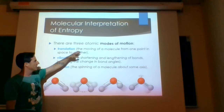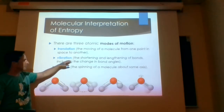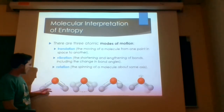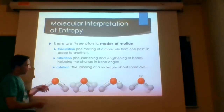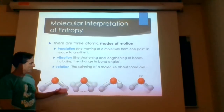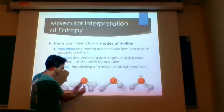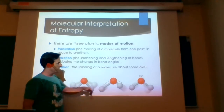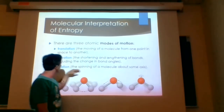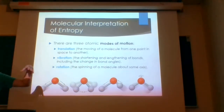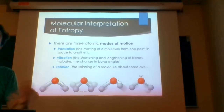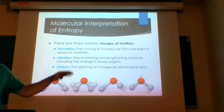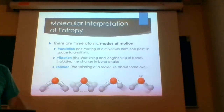There are different ways that molecules can randomly move around. They can move from one place to another — called translation. They can vibrate, where bonds come in and out and atoms move closer and farther apart. Bonds can bend toward each other, and molecules can spin — that's rotation. These are the modes of motion you should be familiar with.